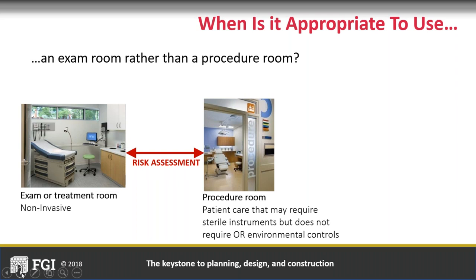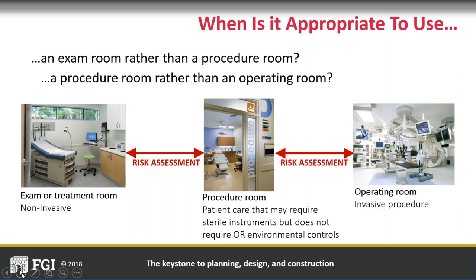So the procedure room — by determining between the two — it's the safety risk assessment. This is where all the people come together: infection control, surgery, procedure people, regulatory, designers, planners, operations — all discussing how the rooms are going to be used and what you're planning to do. It's that risk assessment that determines whether you should be building or doing specific types of things within an exam room or the treatment room. Along the spectrum, the same decision needs to be made between the procedure room and the operating room. When is it appropriate to use the procedure room and you don't need all the infrastructure and cost of an operating room?